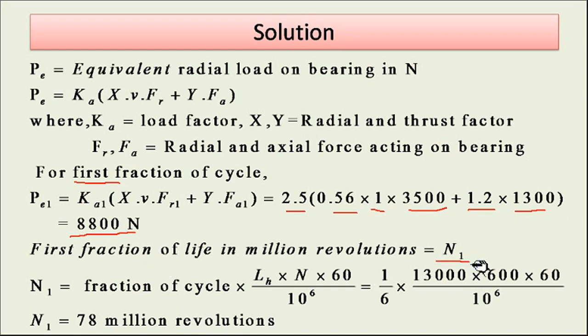For first fraction of cycle, the life in million revolutions N1 is given by: fraction of cycle × Lh × N × 60 / 10^6. This gives me 78 million revolutions.